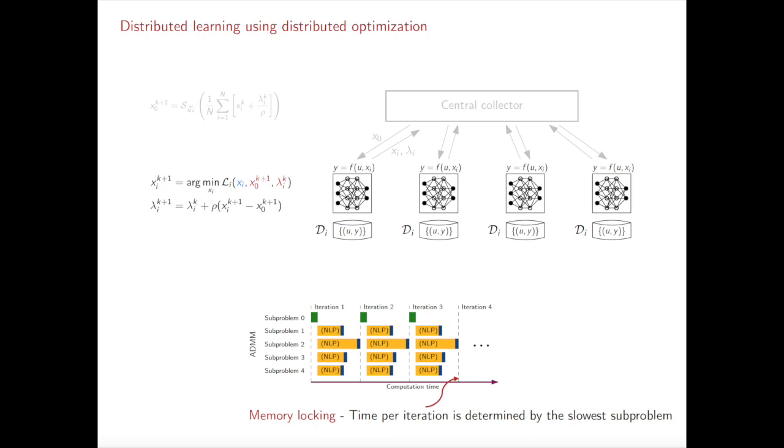This can be challenging, especially if large number of iterations are required, or in real-time decision-making problems such as distributed MPC where ADMM iterations must be solved within the required sampling time. Heterogeneity in the agents, in terms of the local processing power and data size, also implies that the CPU time per iteration is dictated by the slowest agent leading to what is known as memory locking.